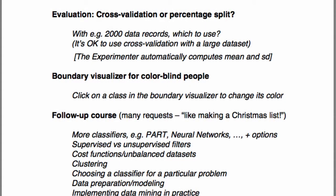In evaluation, there was a question about cross-validation versus percentage split with a large data set, say 2000 data records. I didn't mean to say you shouldn't use cross-validation on large data sets — it's perfectly okay to do so. But if you have a very large data set, you might find the time penalty of cross-validation, a factor of ten for tenfold cross-validation, is too high a price to pay. With hundreds of thousands of instances, maybe you couldn't afford cross-validation. With 2000 records and tenfold cross-validation, that's 200 instances per fold — and it depends on the number of classes. If you have many classes, you might not have a representative number in each fold. But it's always okay to do cross-validation; maybe that's the best thing to do.